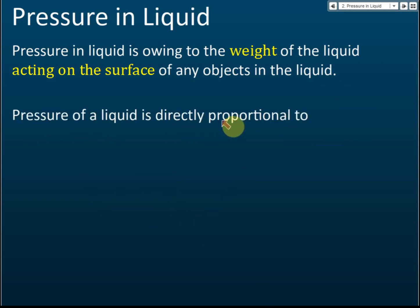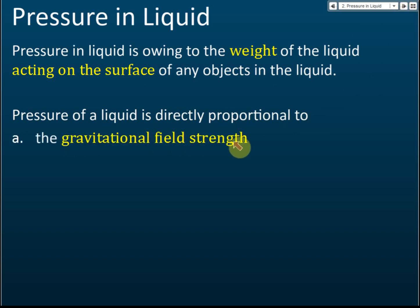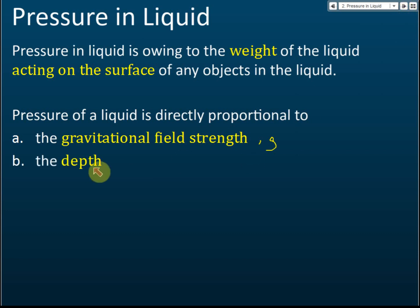Pressure of a liquid is directly proportional to three factors. First, the gravitational field strength, denoted by the symbol g — the higher the gravitational field strength, the higher the liquid pressure. The second factor is the depth of the water, usually denoted by the symbol h.